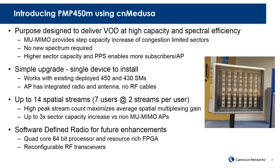The PMP450M was specifically designed to address the traffic load created by services like video-on-demand. With MU-MIMO, it provides a step increase in capacity of congestion-limited sectors without requiring new spectrum. To complement the higher wireless capacity, the performance of the packet processing engine has been enhanced, achieving higher PPS and enabling an increased number of subscribers per access point. The upgrade of a 450 sector is simple — it involves replacing the access point with a 450M access point. The 450M supports a peak of 14 spatial streams comprising seven users, each with two streams. It is this high peak rate which maximizes the average spatial multiplexing gain.